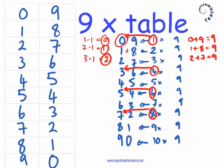So 1 take 1 is 0, I need to add 9. 2 take 1 is 1, I need to add 8. 3 take 1 is 2, I need to add 7.